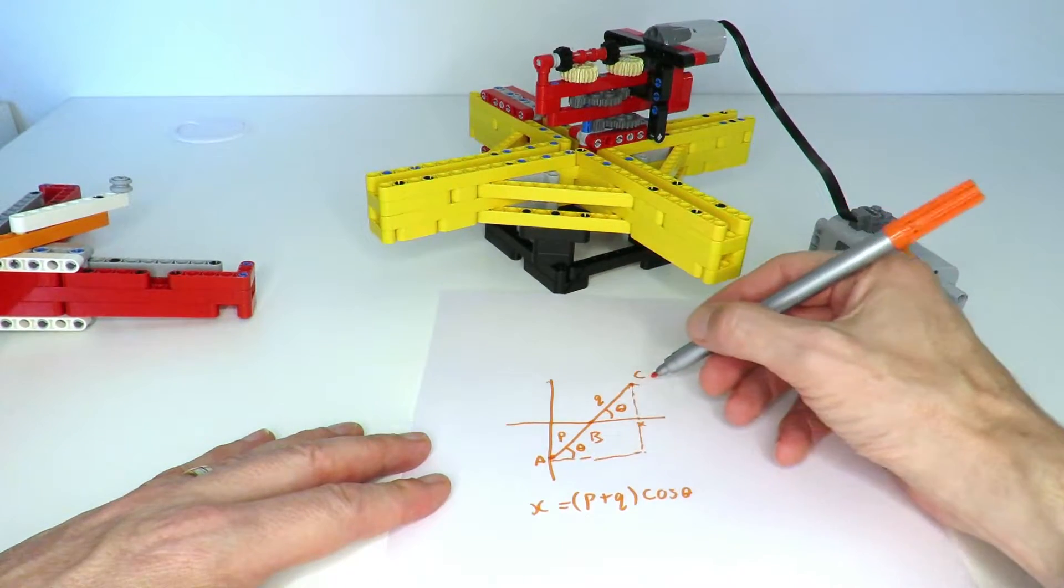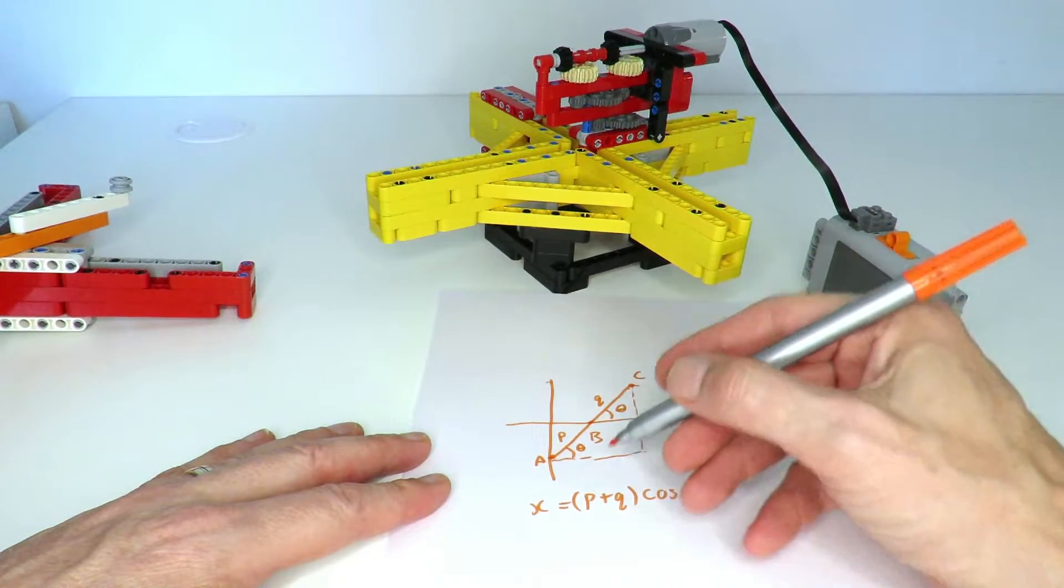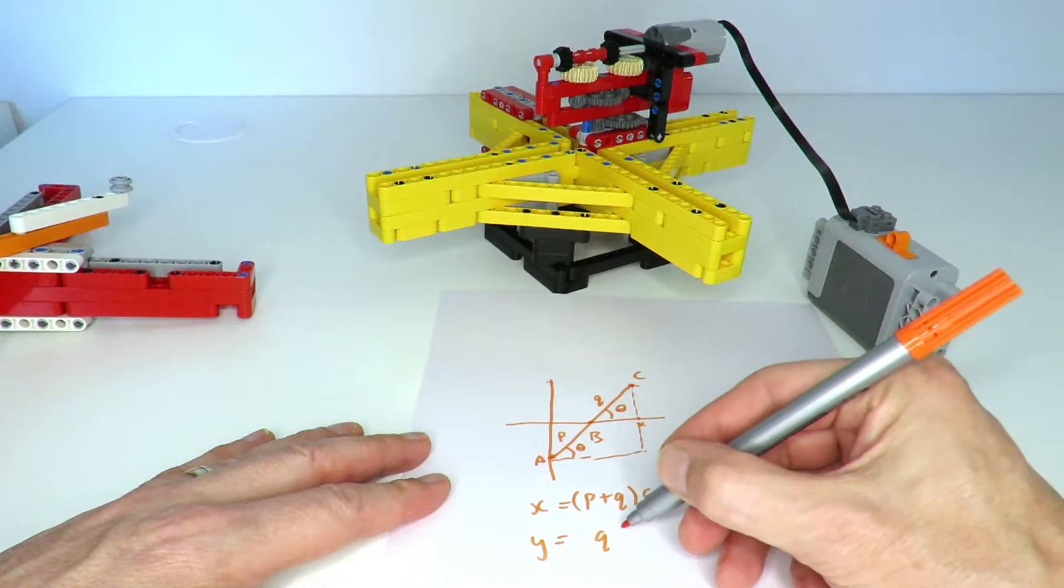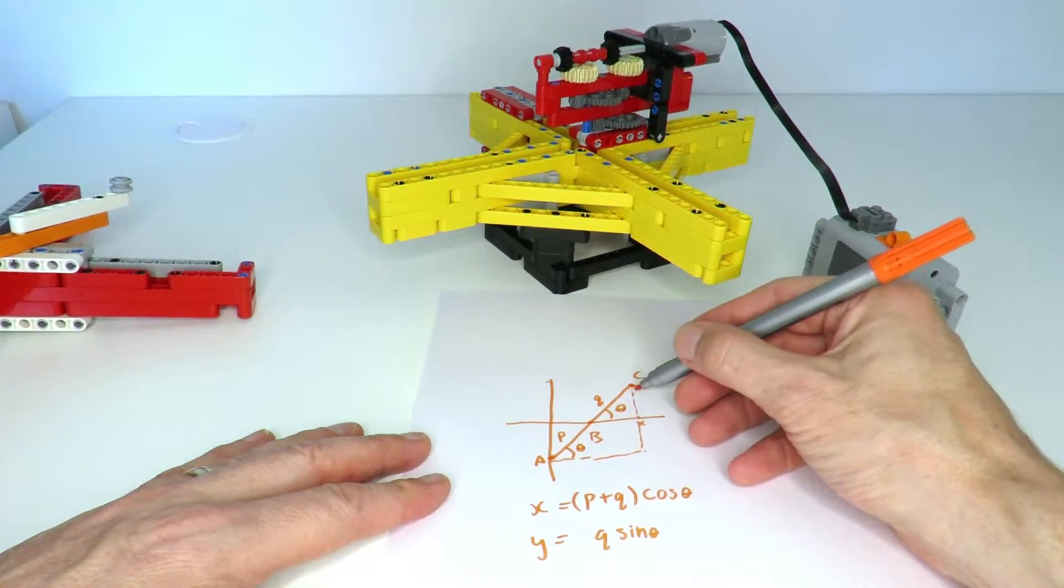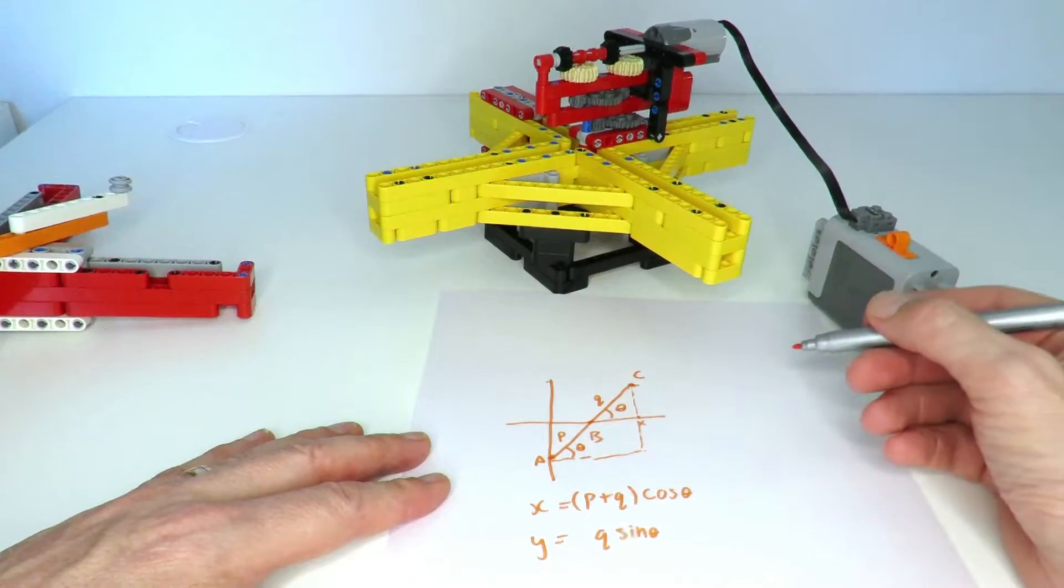And also the y-coordinate, which is that distance from here to here, we can work out as simply q sin theta. So it's using theta here and that distance as the hypotenuse of that triangle.